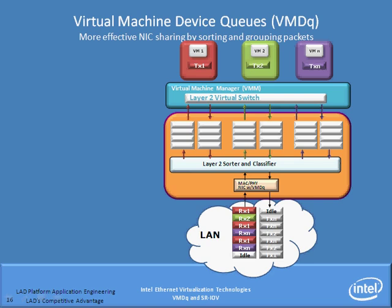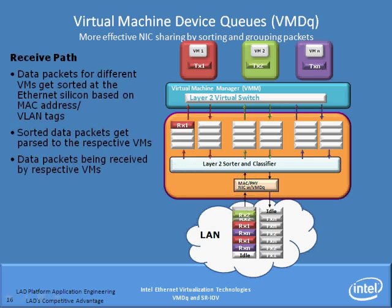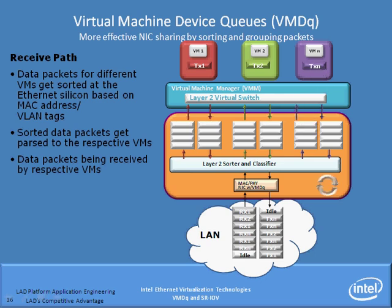So Intel developed Intel VMDQ technology, which speeds up the process of sorting these incoming packets. A packet comes in and it's sorted into different queues based upon a MAC or VLAN tag, configured by the VMM through our layer 2 sorter and classifier. This offloads the sorting so the hypervisor doesn't have to do it — that's a big benefit that helps speed things up.